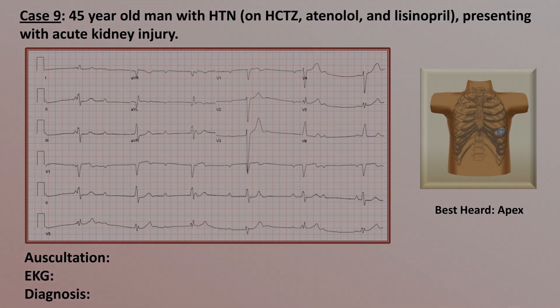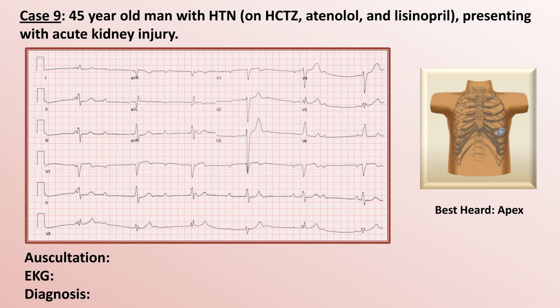Case 9: a 45-year-old man with hypertension who is on hydrochlorothiazide, atenolol, and lisinopril, presenting with acute kidney injury.